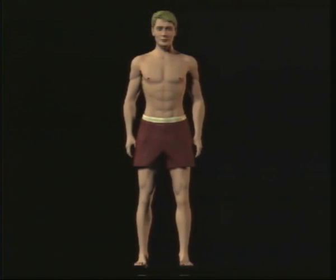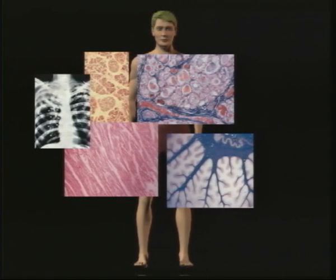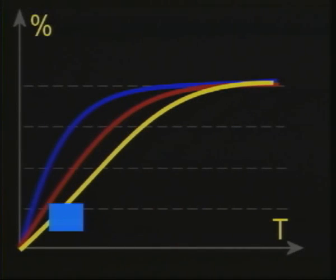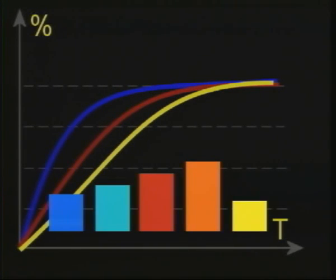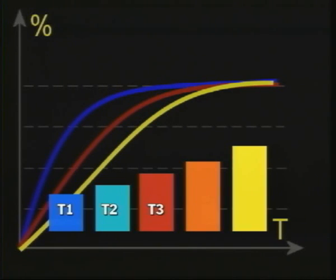But the human body is not formed by a single homogeneous tissue. Therefore, it was schematized as if it were formed by five families of tissues, each with tissue half times of 5, 10, 20, 40, and 75 minutes.